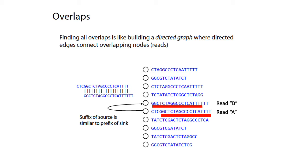How you build an overlap graph is that you first draw a circle, or what's called a node, for each one of the reads that you've sequenced. So if you sequenced 10 reads, then you should draw 10 circles representing 10 nodes in this graph. Then, for every pair of reads or every pair of nodes in your graph, you check for overlap between those pairs of reads.